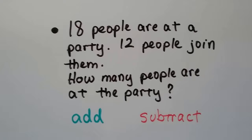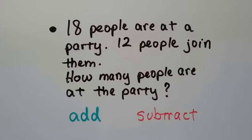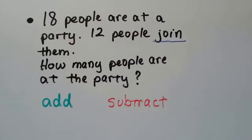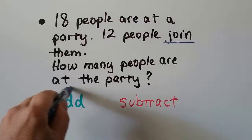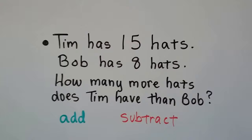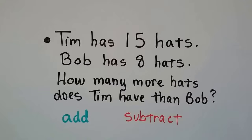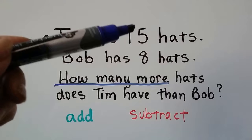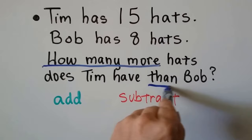18 people are at a party. 12 people join them. How many people are at the party — would we add or subtract? See the word 'join'? This word tells us that we're combining, putting the numbers together, joining them — so that means we're going to add. Tim has 15 hats, Bob has 8 hats. How many more hats does Tim have than Bob? 'How many more' is a clue word for subtraction. We need to compare and find the difference between 15 and 8, and that would be how many more Tim has than Bob. So that tells us subtraction.